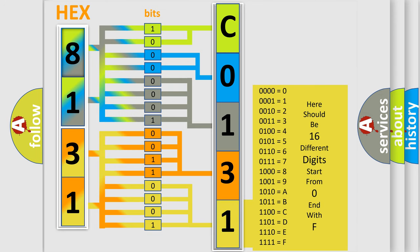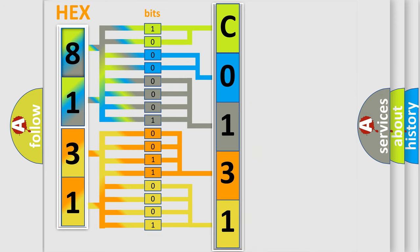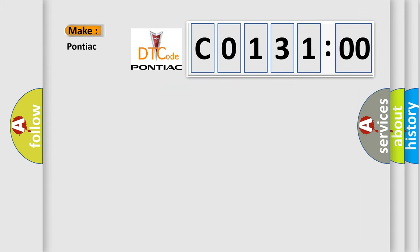We now know in what way the diagnostic tool translates the received information into a more comprehensible format. The number itself does not make sense to us if we cannot assign information about what it actually expresses. So, what does the diagnostic trouble code C013100 interpret specifically for Pontiac car manufacturers?